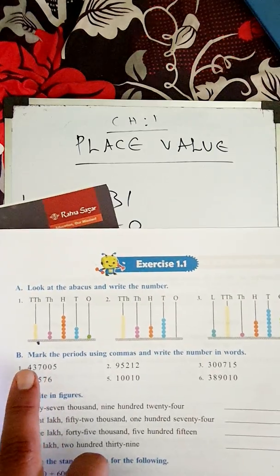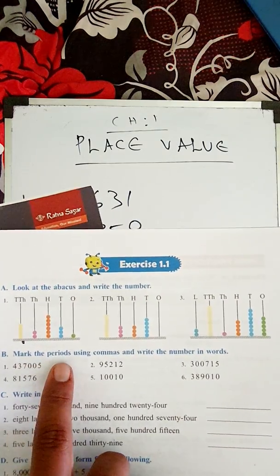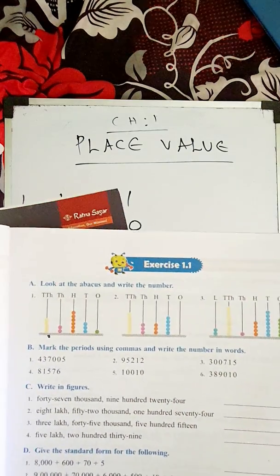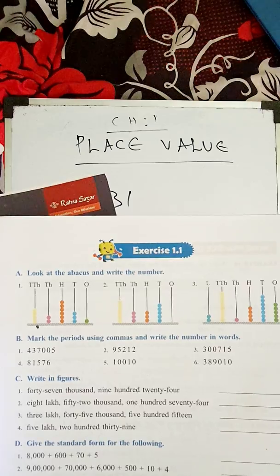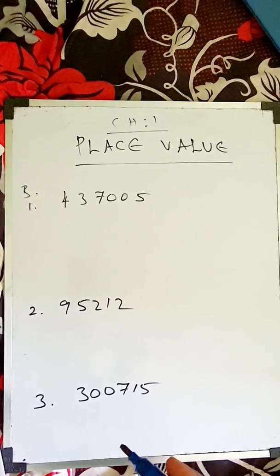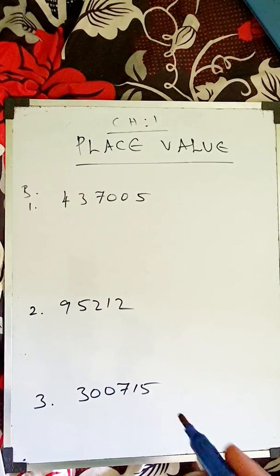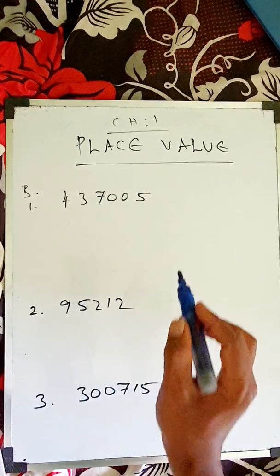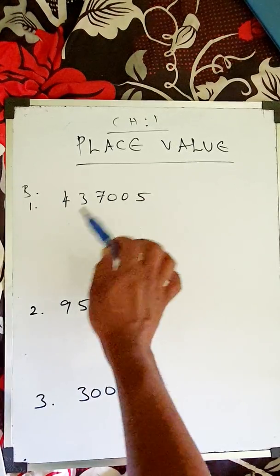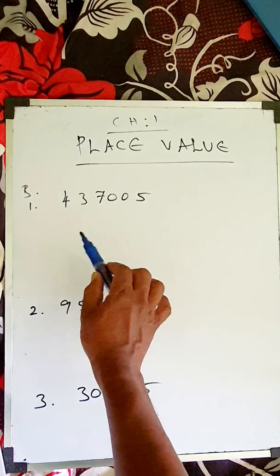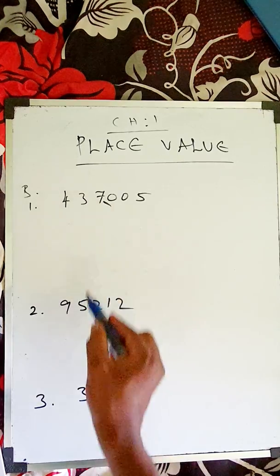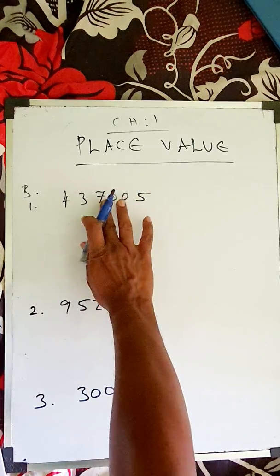Now Question B: mark the periods using commas and write numbers in words. To put commas, look at the number and start from the back. The first three numbers from the right — one, two, three — you put a comma after them.